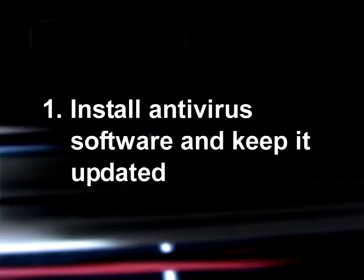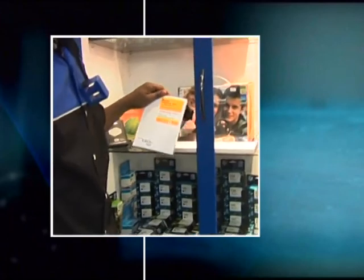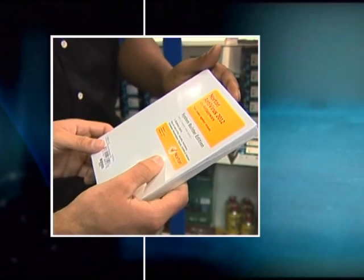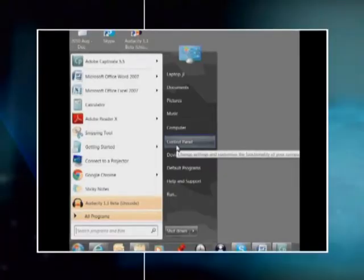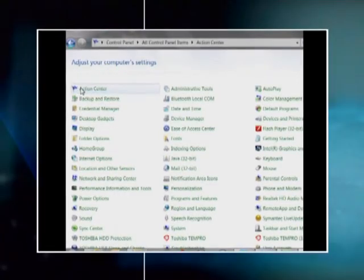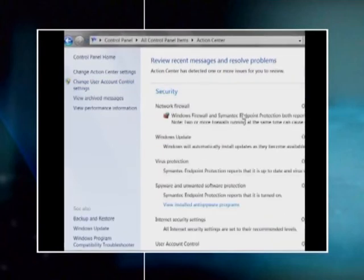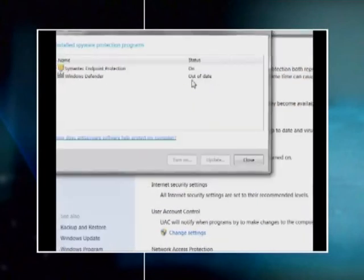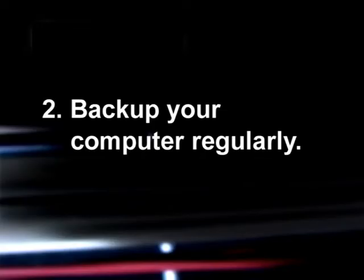There are many reasons why you might be the target of a cyber threat, and you need to protect yourself. One of the best things you can do is install antivirus software and make sure it is kept up to date. An antivirus is protective software designed to defend your computer against malicious software. There are many types of antivirus software and in some cases you can get them free off the internet. To be effective, your antivirus software needs to run in the background all the time, and because new malware is constantly being developed, it is important to update your antivirus regularly.